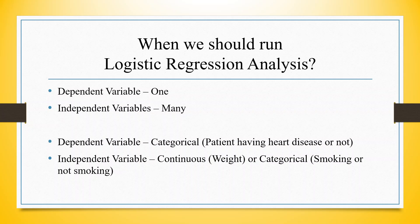In which situation should you go for logistic regression analysis? You have one dependent variable and many independent variables, but this dependent variable is categorical — for example, a patient having heart disease or not, or a customer purchasing a product or not. Basically, we want the dependent variable to be dichotomous, while the independent variables can be continuous or categorical.